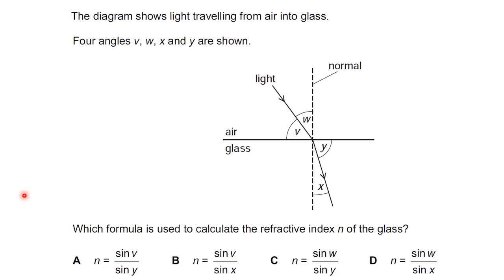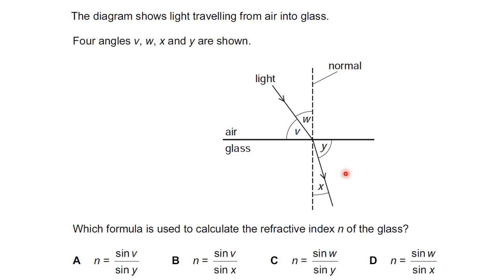Question 6: The diagram shows light traveling from air into glass, with four angles V, W, X, and Y shown. Which formula is used to calculate the refractive index N of the glass? The refractive index formula is N = sin I / sin R. The angle of incidence is the angle between the incident ray and the normal, which is W, and the angle of refraction is between the refracted ray and the normal, which is X. So the formula for this question is sin W / sin X. The answer is D.